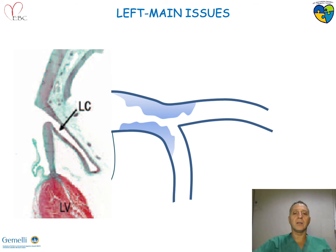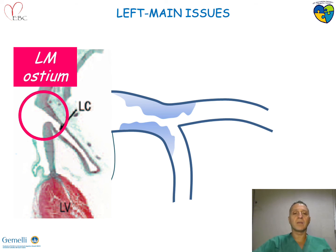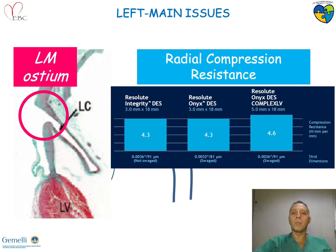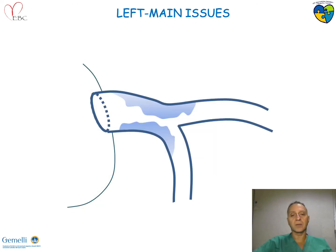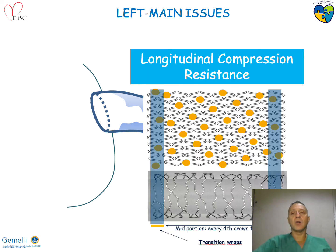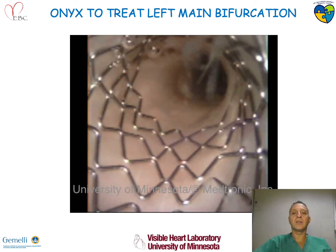A final remark regarding the left main: we know that the ostium is very stiff tissue, very particular aortic tissue, so compression resistance should be adapted. You can see that there was an improvement over time from Resolute Integrity to the Onyx stent large. Also, since there can be interaction with the guiding catheter, there are also multiple links here that may reduce longitudinal compression chances.